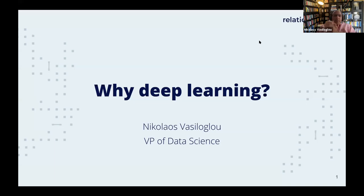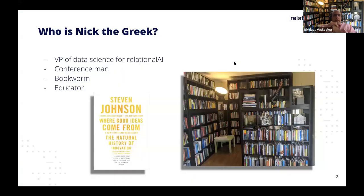I'd like to see myself more like an old guy at a fireside than an instructor today. The title is Deep Learning 101, but I'll change it and ask: why deep learning? I'm VP of Data Science for Relational AI. I describe myself as a conference man — I've organized a lot of conferences in the past and co-organized academic workshops. You can probably tell from my background that's my library — I like books, and you're going to see a lot of book recommendations during this presentation.